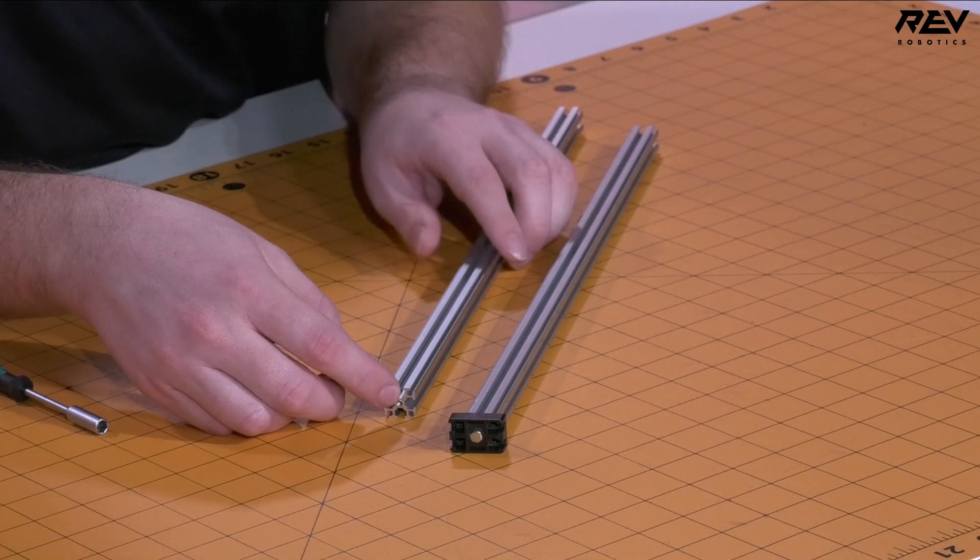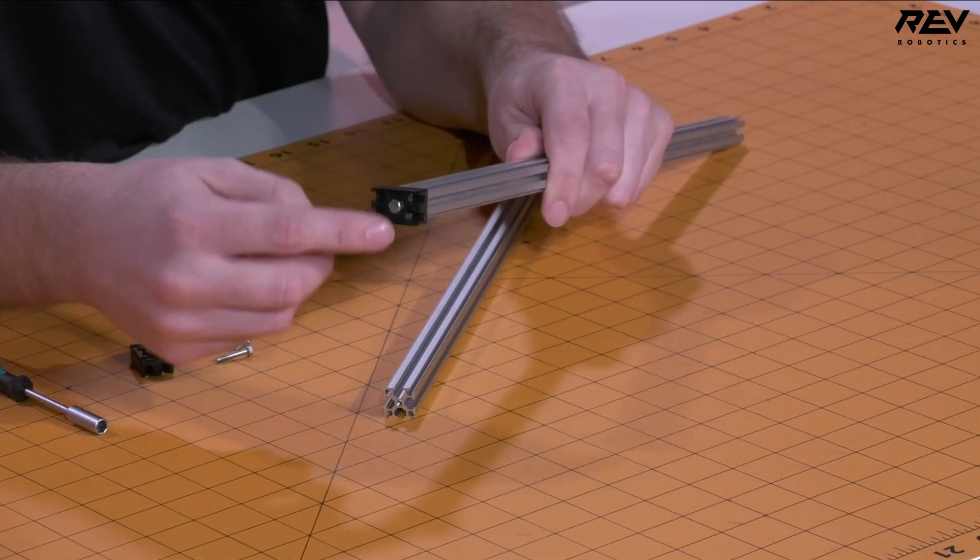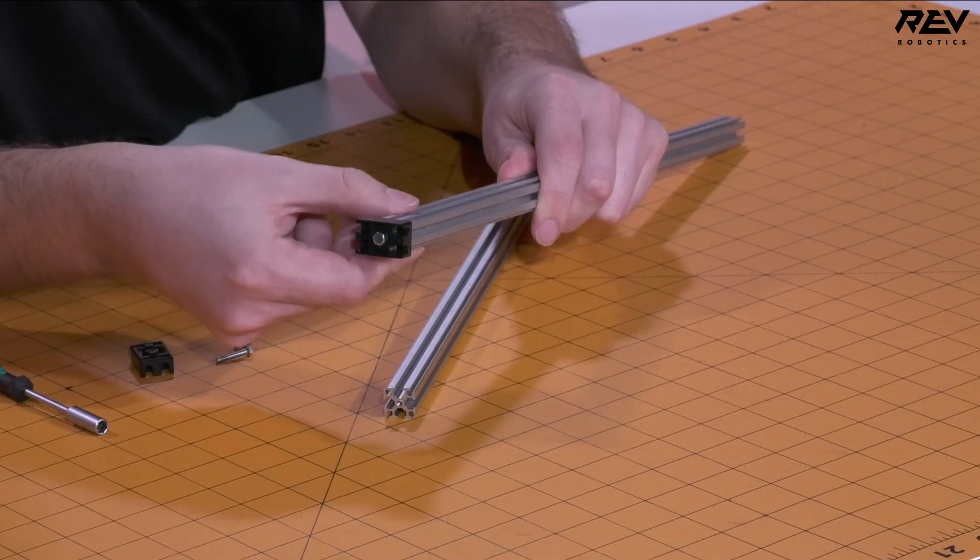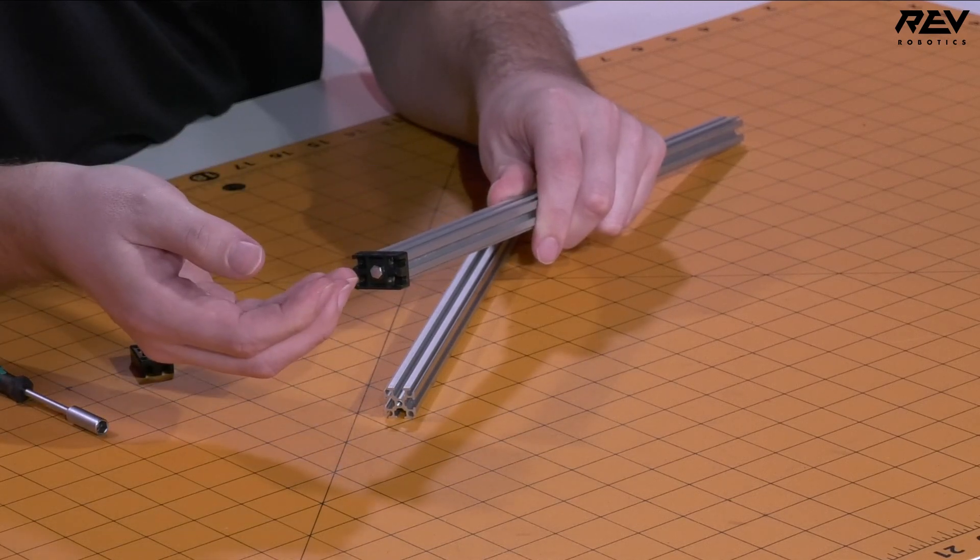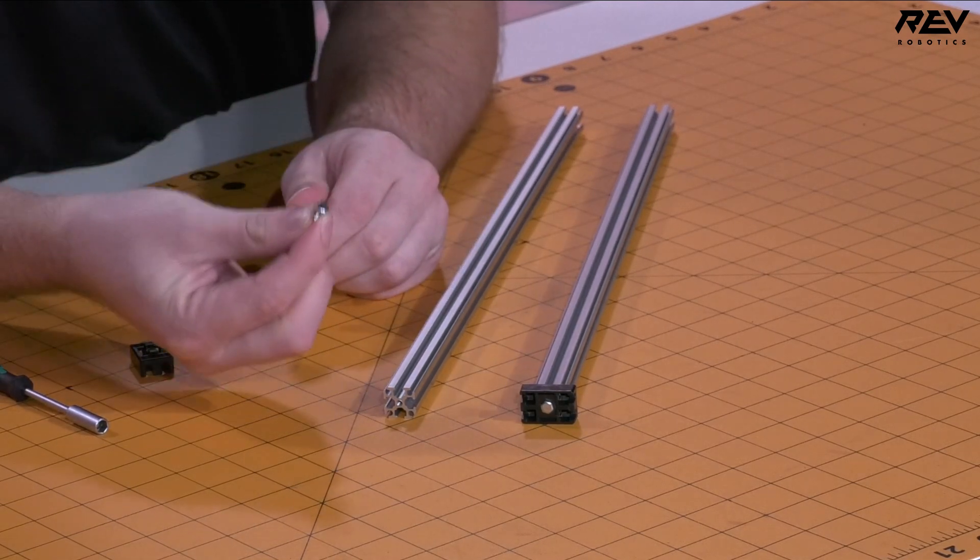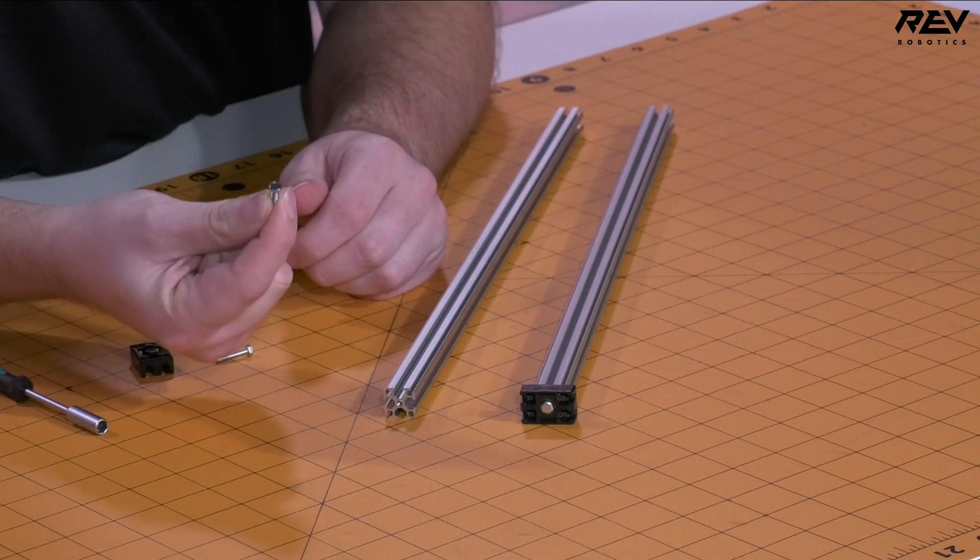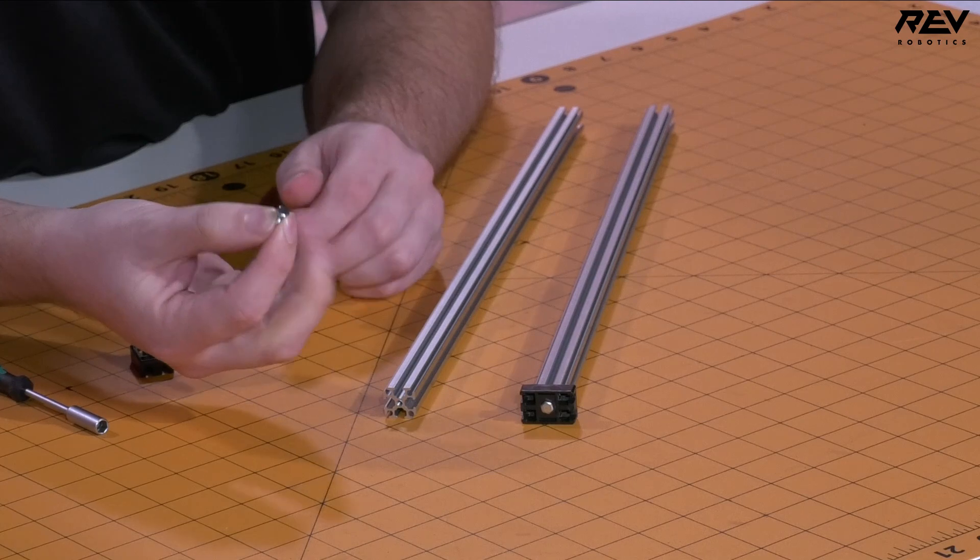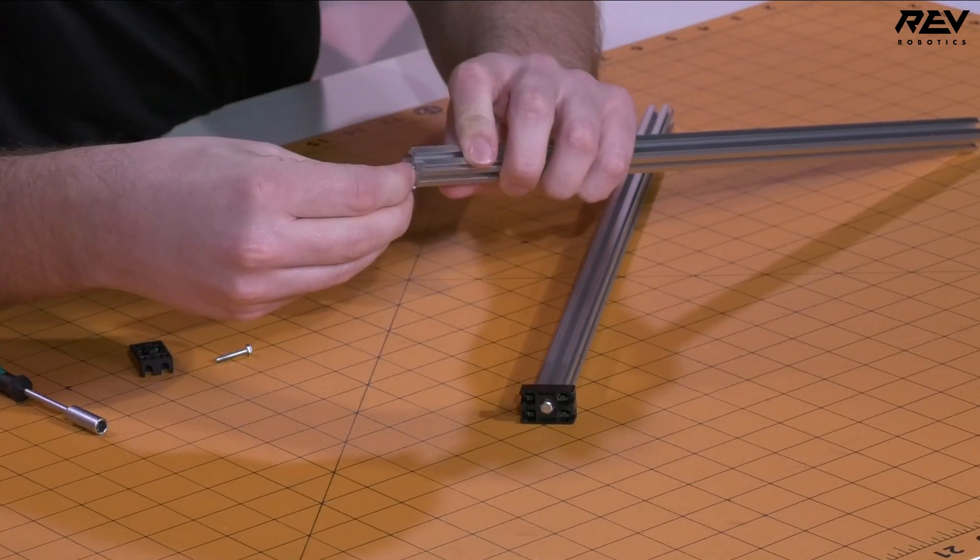Now trying to do this while you're trying to keep the end cap seated onto the extrusion can be a little bit difficult. So one of the easy tips is to just take an M3 eight millimeter long hex head and start the process of tapping beforehand.